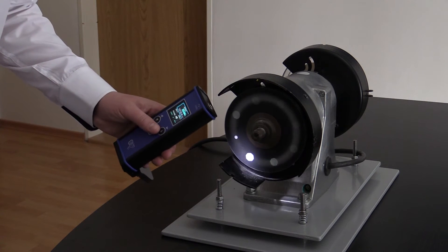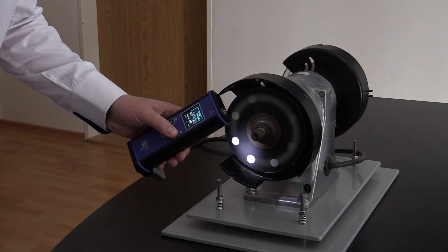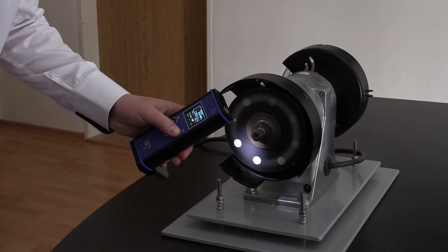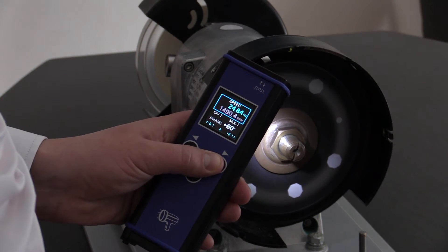With the strobe I can find my correct speed. I'm adjusting the speed now. I can see it in Hertz and RPM. So now the machine is virtually stopped.